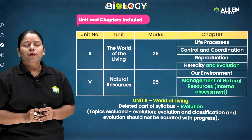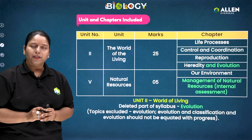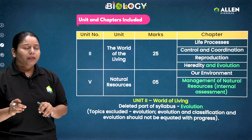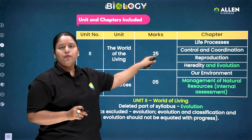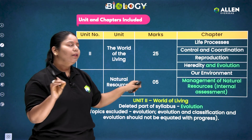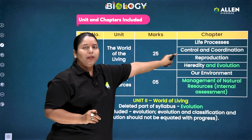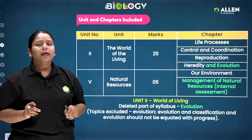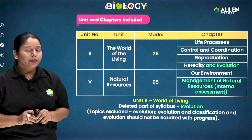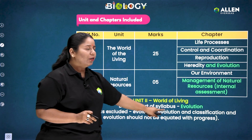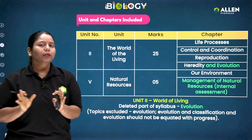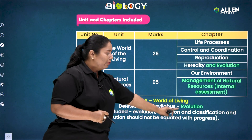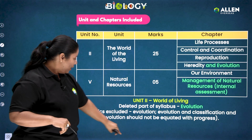Before going into more details, it is very important to discuss the syllabus included in biology. In our syllabus we have two units. Unit 2 is 'The World of Living,' which has a weightage of 25 marks and includes Life Processes, Control and Coordination, Reproduction, and Heredity and Evolution. From Heredity and Evolution, the deleted part of the syllabus includes Evolution complete — the topics are Evolution, Evolution and Classification, and 'Evolution should not be equated with progress.'